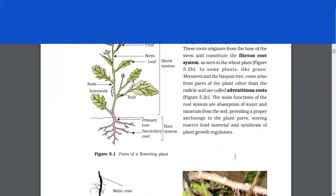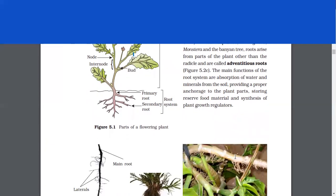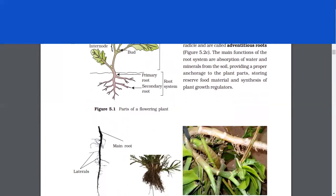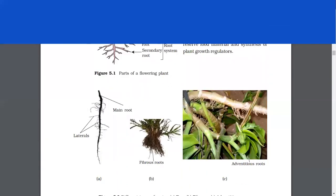The main functions of the root system are absorption of water and minerals from the soil, providing a proper anchorage to the plant parts, storing reserve food material and synthesis of plant growth regulators.